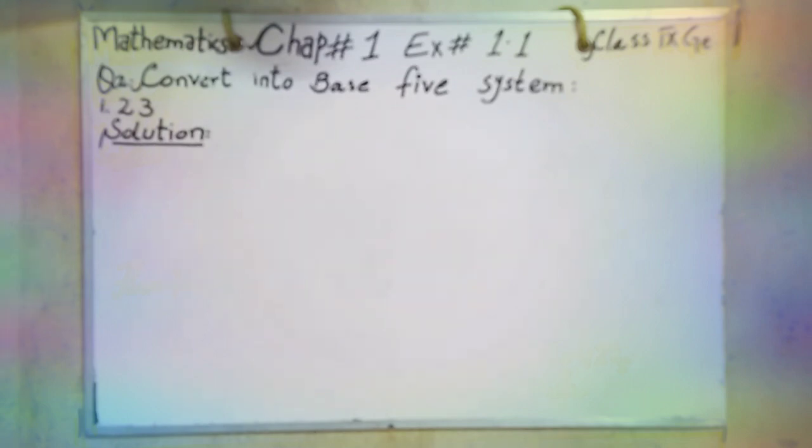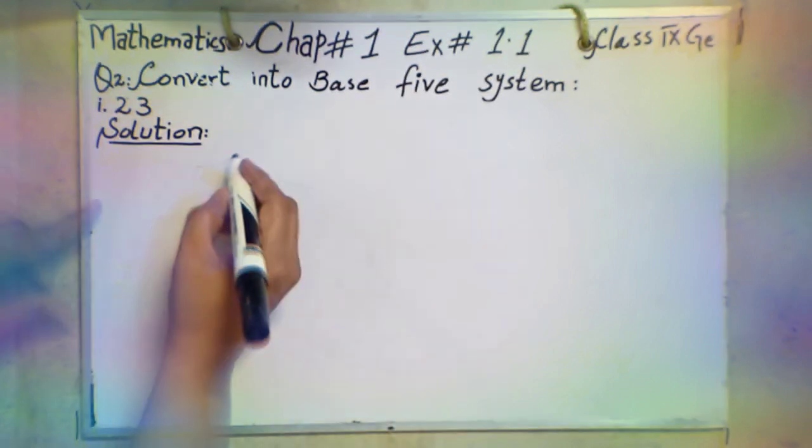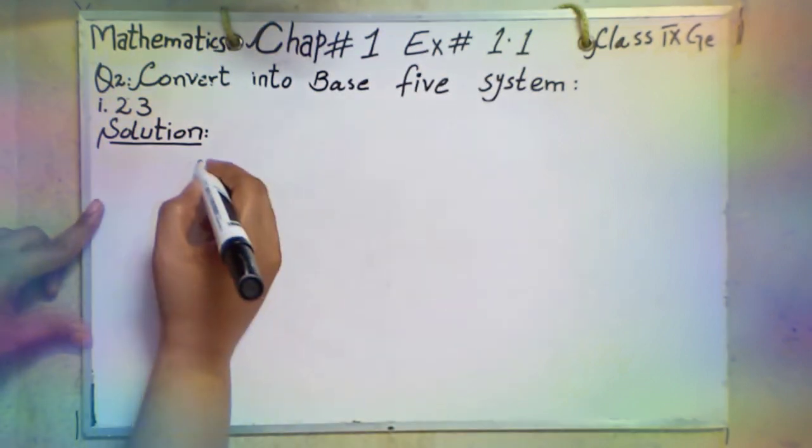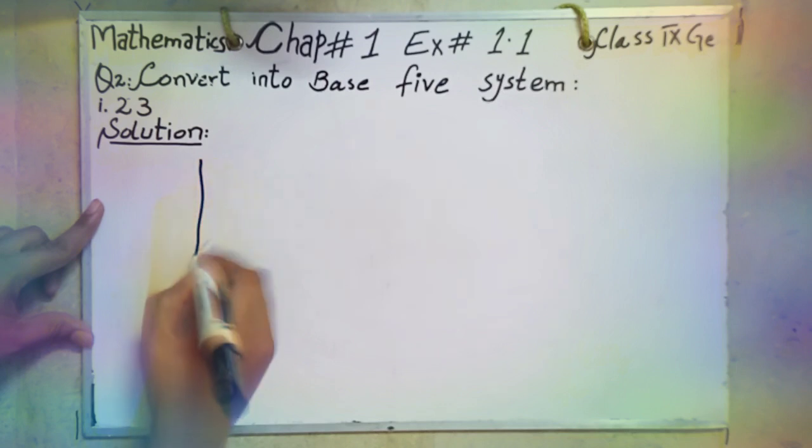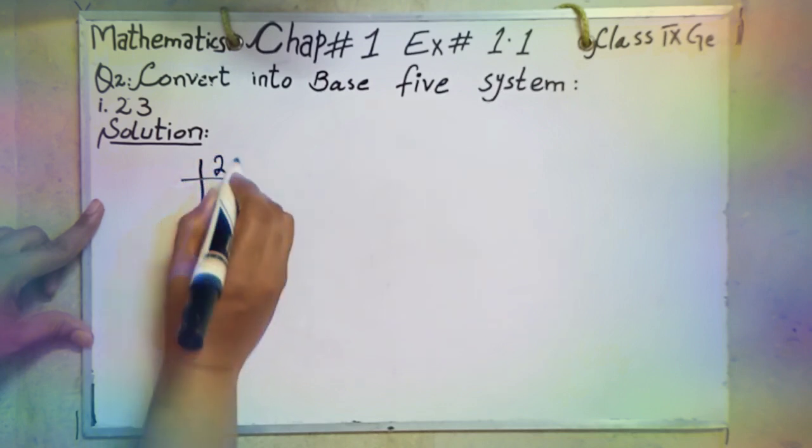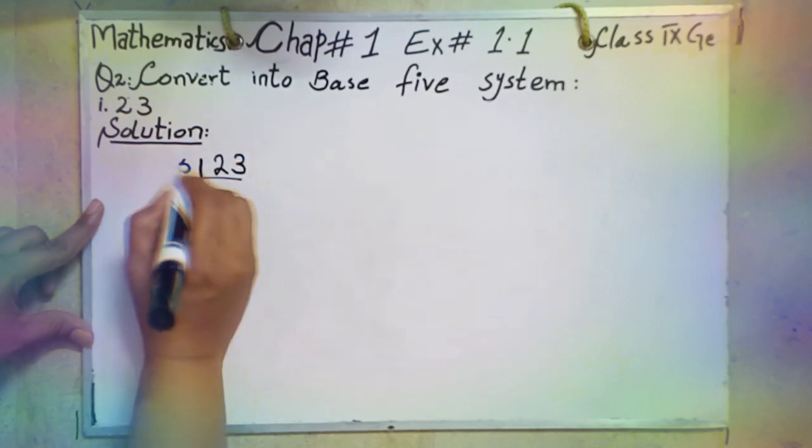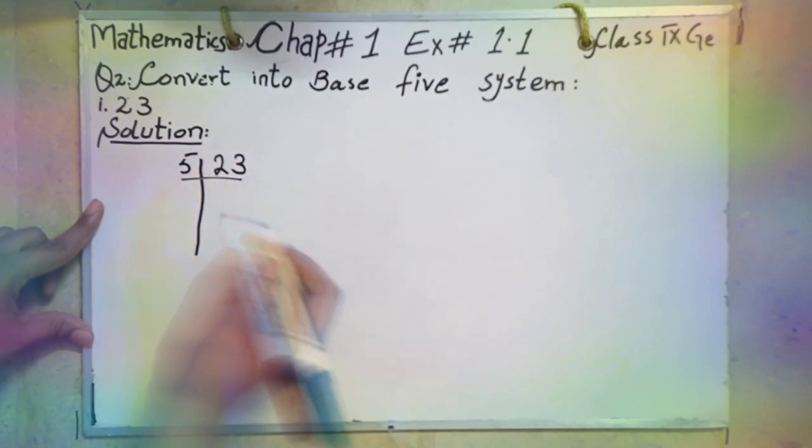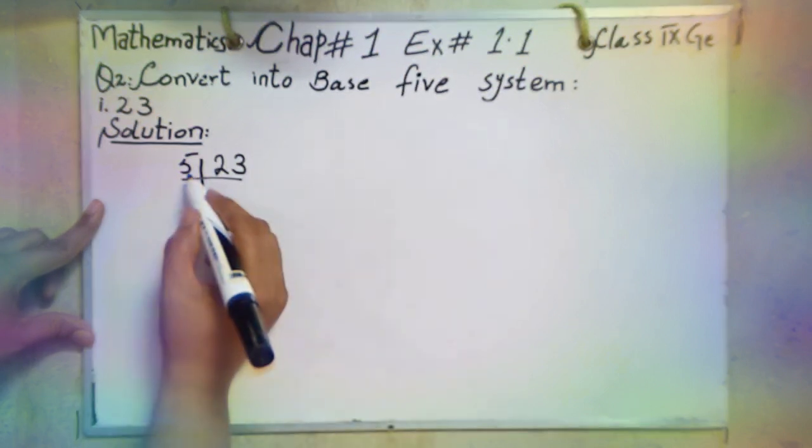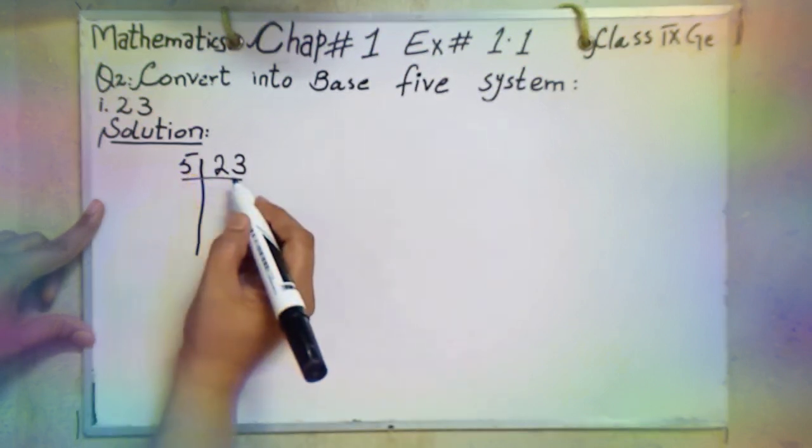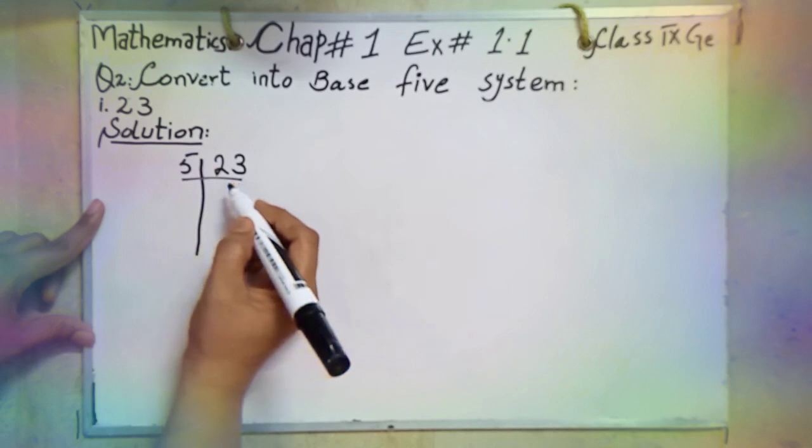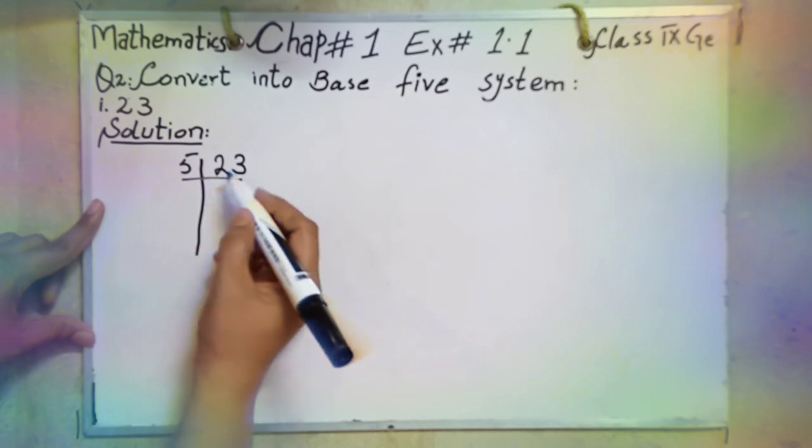The first part is 23. First we will solve 23 in Base 5 System. In Base 5 System we use only 5, it means table of 5, not other number. 5, 1 is 5, 2 is 10, 3 is 15, 4 is 20, 5 is 25.